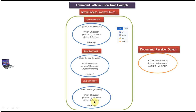So the invoker doesn't know how to handle the request — it uses the command object's execute method to call the receiver object's methods to handle the request. This is a very good example of the command design pattern. I have created separate videos for the command design pattern class diagram and implementation, so please log into my channel and watch those videos. Thanks for watching, bye.